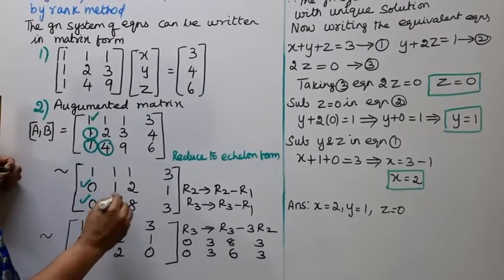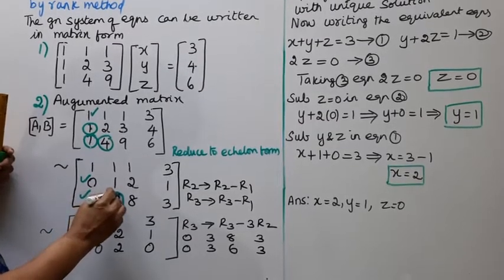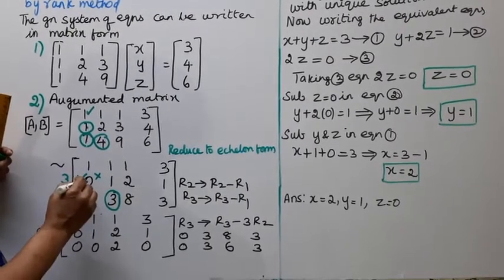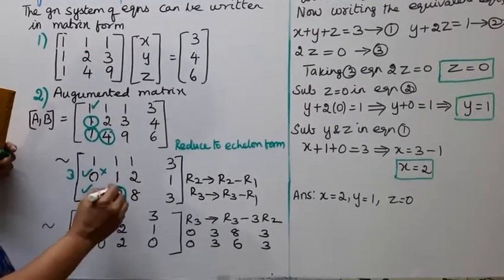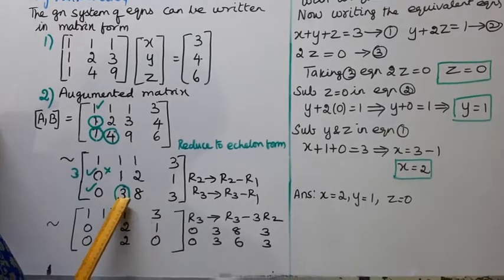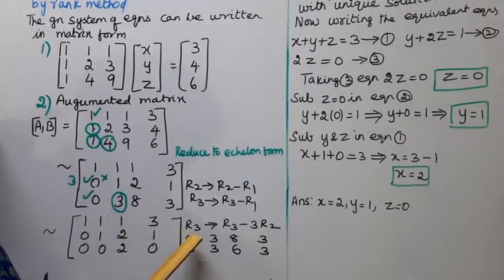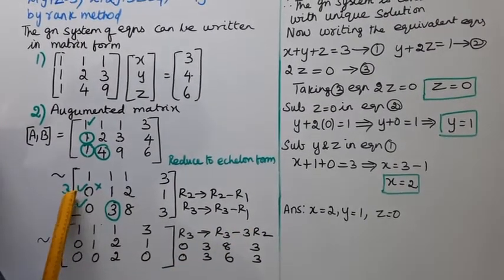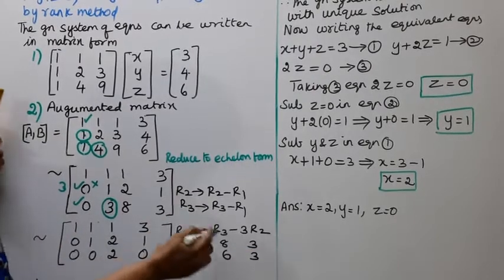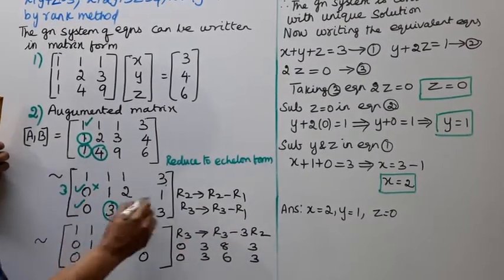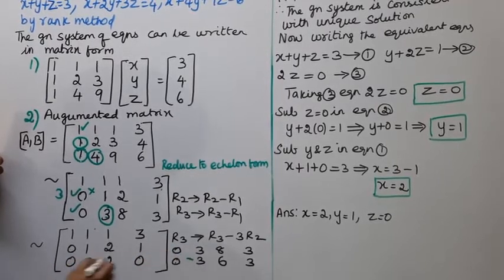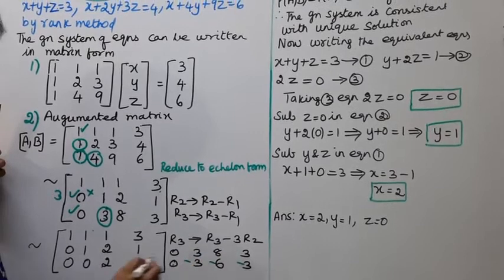3 minus 3 is equal to 0. So 3 will be equal to 0. 3 into 1 is 3, 3 minus 3 is 0. That is R3 tends to R3 minus 3R2. This is 0, R3 is 0. R2 is 3 into 0 is 0, 3 into 1 is 3, 3 into 2 is 6, 3 into 1 is 3. R3 minus 3R2: first row is 2, second row is 3, third row R3 is 0, 0 minus 0 is 0, 3 minus 3 is 0, 8 minus 6 is 2, 3 minus 3 is 0.